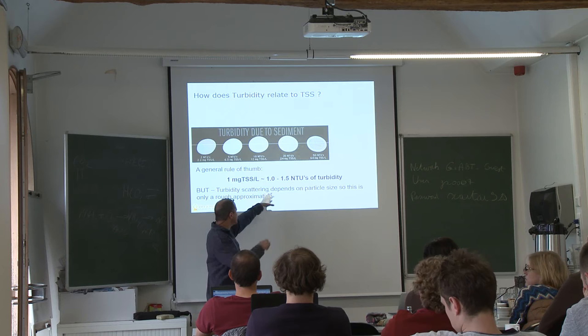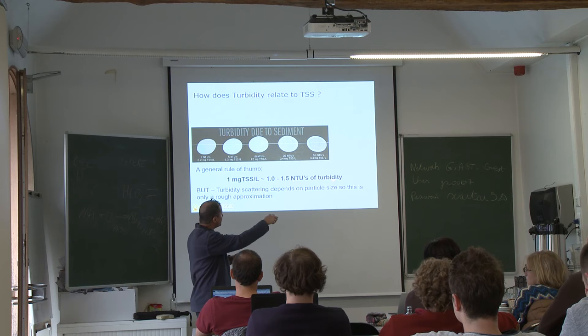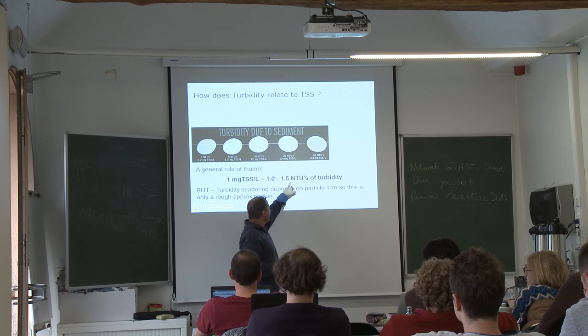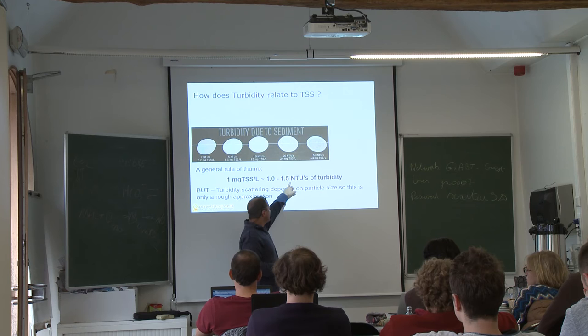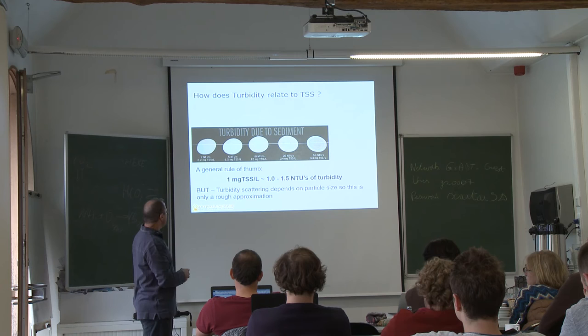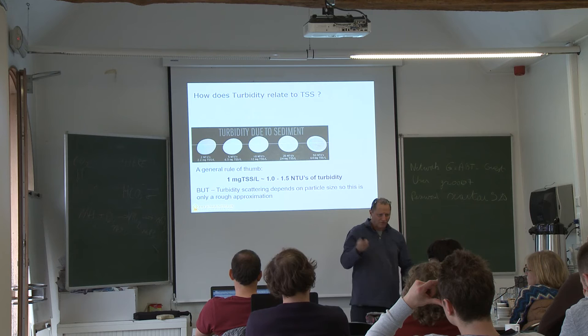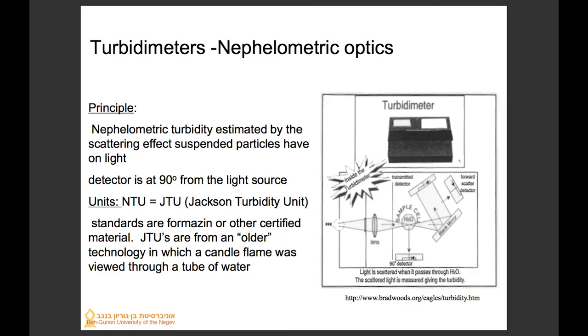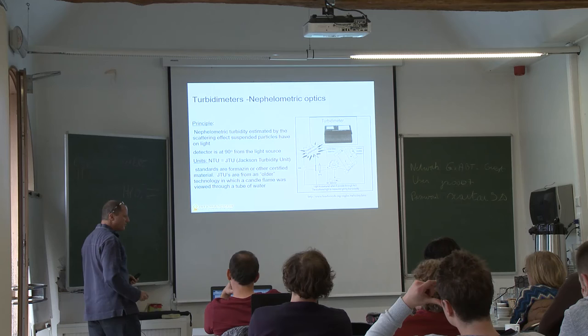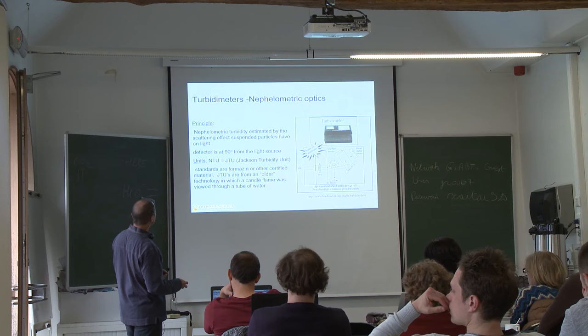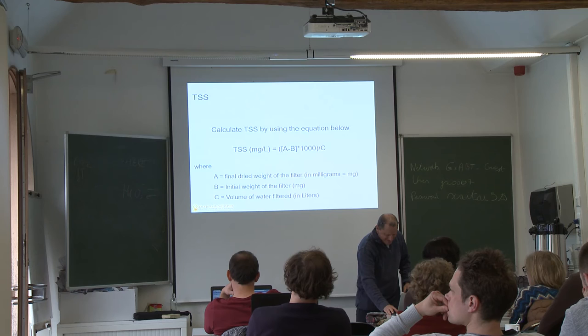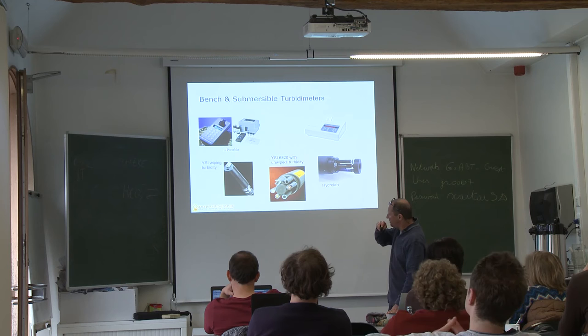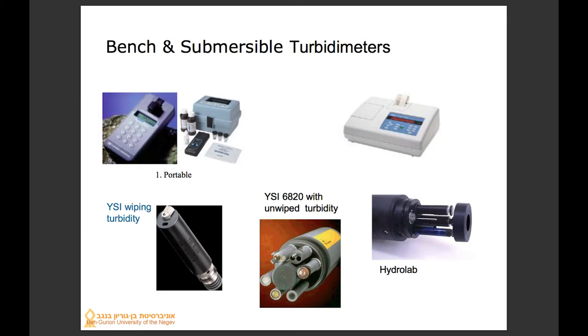As a rule of thumb, 1 mg TSS equals approximately 1 to 1.5 NTU — nephelometric turbidity units. 'Nephelometer' comes from Latin or Greek for turbidity. You can see that different NTU values correlate to TSS, and if you establish this relationship in your lab you can save a lot of time. We planned to explain how a turbidity meter works, but we won't be using one today.